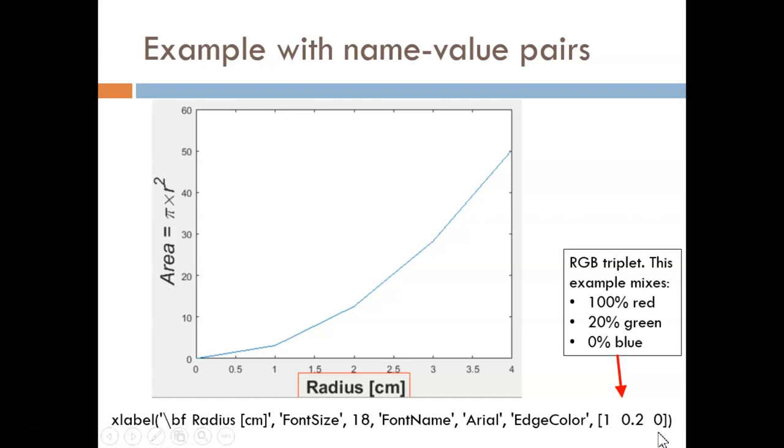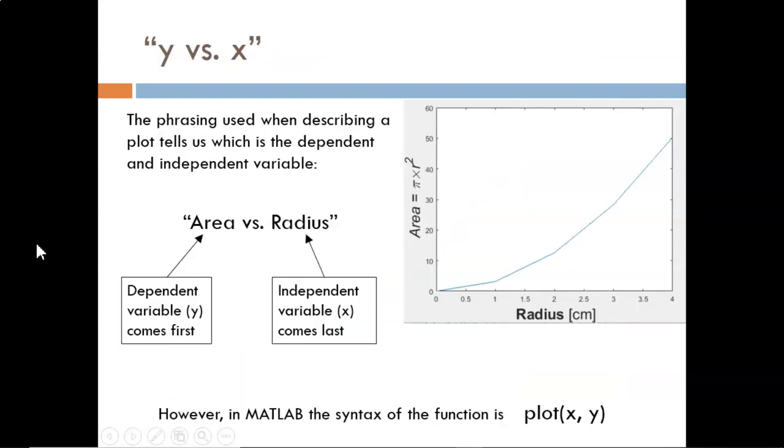This final slide is a reminder of a convention used when talking about a plot in a sentence. The phrase something versus something implies that the first variable mentioned is the dependent variable and should be plotted on the y-axis. In this example, dependent area is a function of independent radius. This convention is usually followed, but not always, so be very particular when you hear something versus something, and use your judgment to identify what is meant. Also, a common mistake I've noticed with my students is to flip the order of the variables when using the plot function in MATLAB. The phrasing goes y versus x, but the syntax goes x comma y.